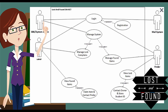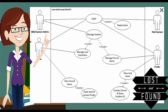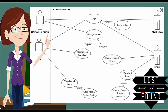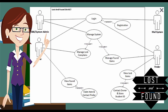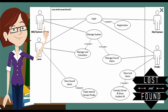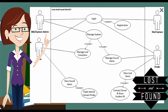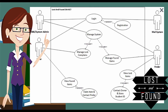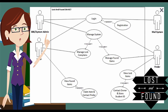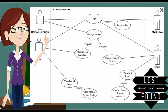The core functionalities of the lost and found system represented as use cases are: login, registration, manage system, manage lost complaint, manage found items, view found items, claim item and contact finder, view lost items, contact owner, and store student ID. Let's look at the first use case, which is login. You take the functional requirements you've already developed and use them to build your use cases.